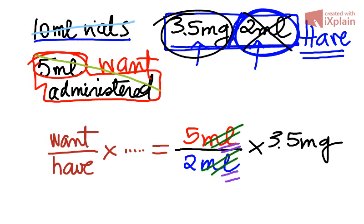So the calculation to be done is 5 divided by 2 times 3.5. We get 8.75 mg, and the unit has to be the only unit that was left in our equation. So 8.75 mg of the drug.